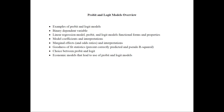Then I will talk about the nature of the binary dependent variable, which is a 0/1 variable. Next, I will compare the linear regression model, the probit and the logit models, their functional forms and properties. Next, I will talk about the model coefficients and their interpretations. We will then talk about marginal effects and odds ratios and their interpretations. Next, we will talk about goodness-of-fit statistics — the percent correctly predicted and the pseudo R-squared — typical when using these binary models. Then I will talk about the choice between the probit and the logit model. And finally, I will talk about the economic models that lead to the use of the probit and logit models.